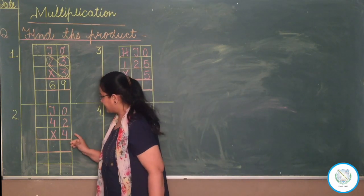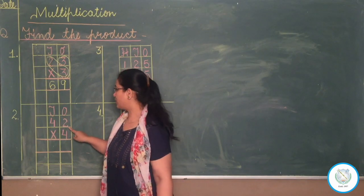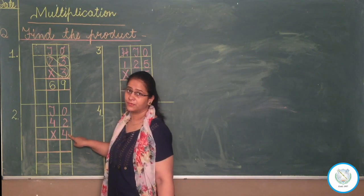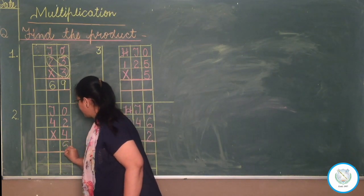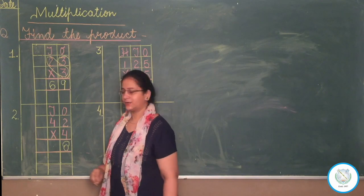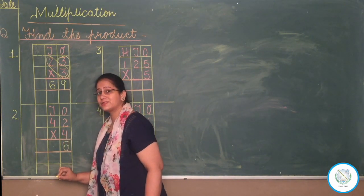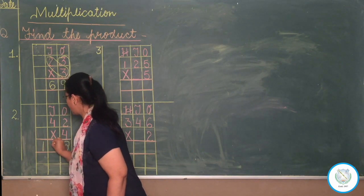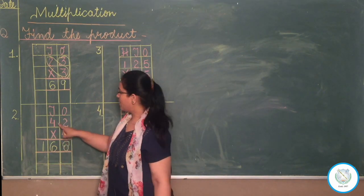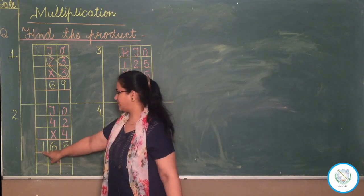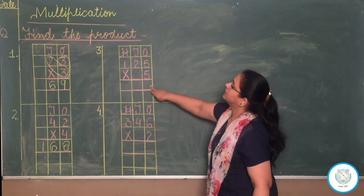Now see the next sum. Forty-two multiplied by four. First we will solve the one's house: two multiplied by four is eight. Now four times four is sixteen, so we write one number in one block. The answer, that is the product, is 168. So forty-two multiplied by four equals 168.